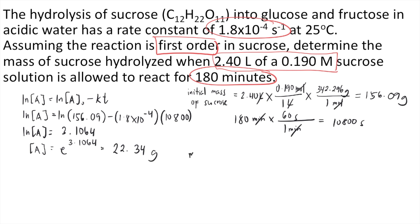We already know the initial amount, which is 156.09, and we know the final amount, which is 22.34 grams. Now we can solve for the mass of sucrose hydrolyzed, which is just your initial amount minus the final amount. If you solve that, 156.09 minus 22.34, the amount of sucrose hydrolyzed was 133.75 grams. And that is the answer to the question.